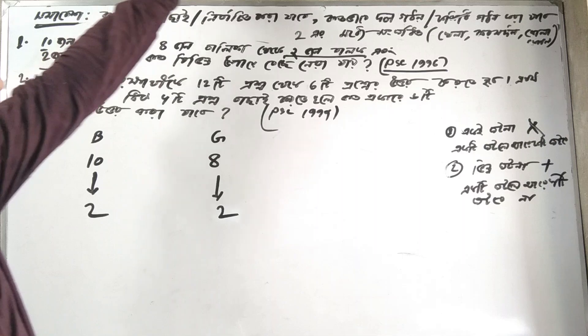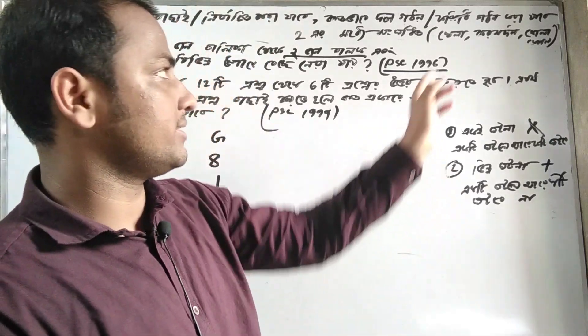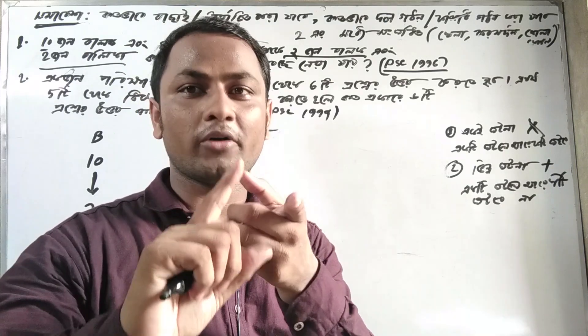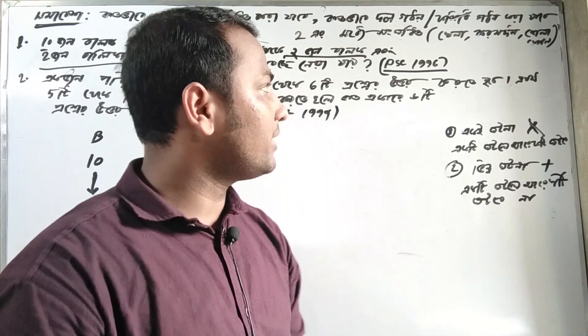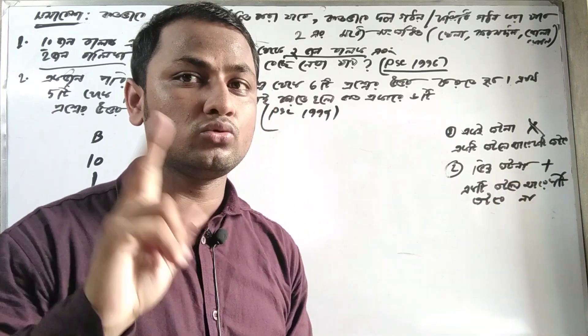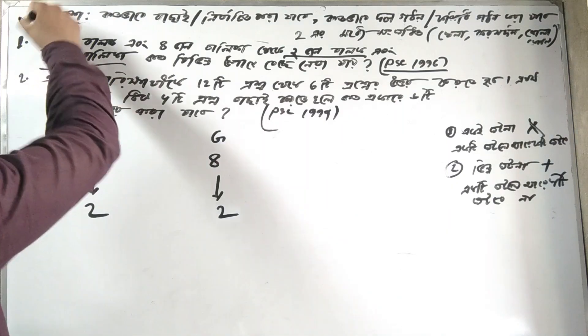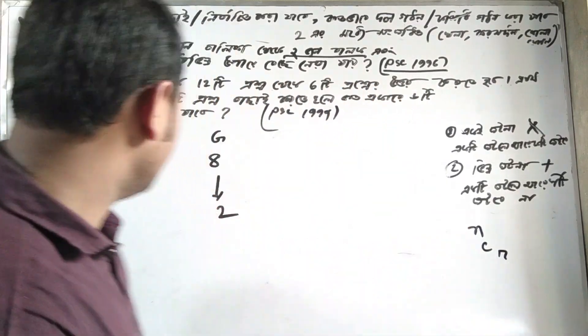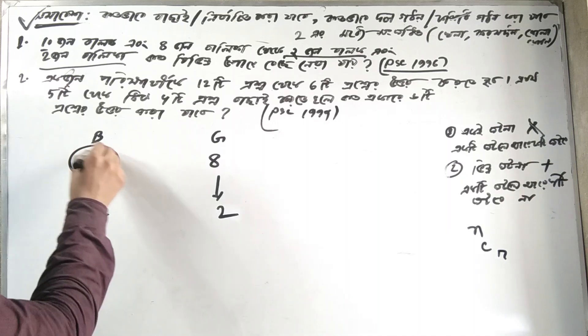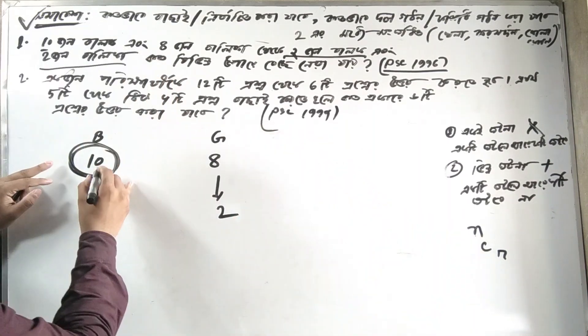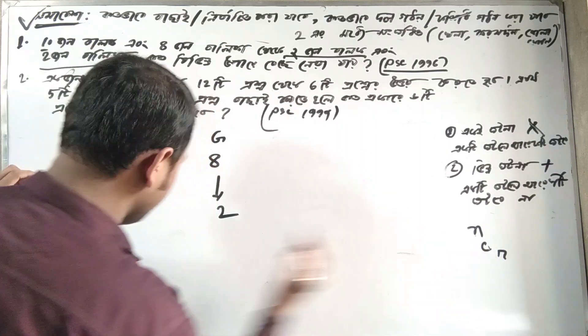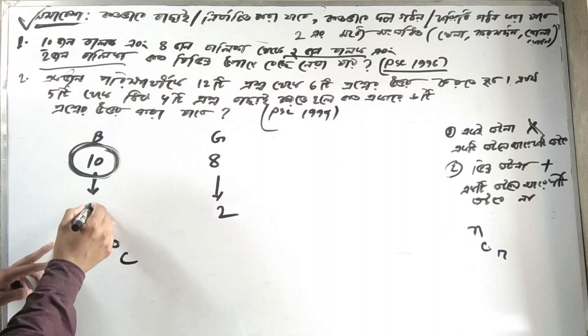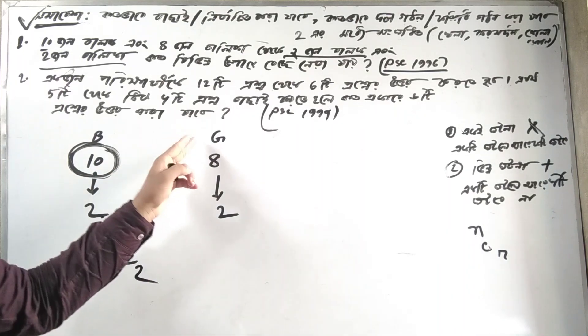For two groups, we can calculate using basic combination principles. If we need to select from two different groups, we can use 4C2 or similar formulas. The approach depends on whether we're selecting from one group or both groups, and whether the selections are independent.